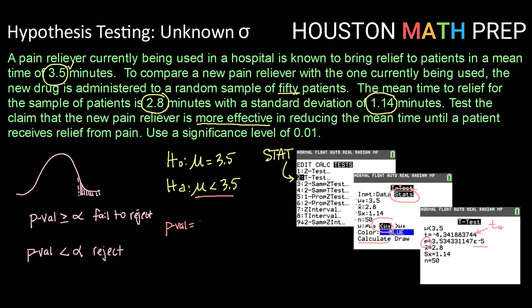Remember that e to the negative 5 means zero point and then we'll have four zeros. One, two, three, four, and then three, five, three, and so on.